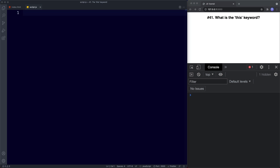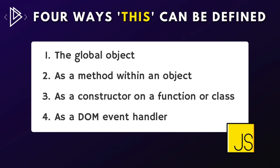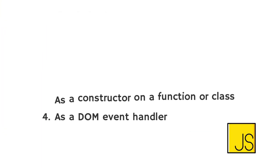There are four main contexts in which the value of this can be defined: the global object, as a method within an object, as a constructor on a function or class — we'll look at this later when we look at constructor functions and classes — and finally as a DOM event handler. So let's start with the global context.